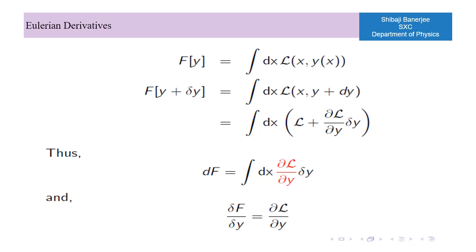When the functional has no dependence on the derivative of the field, the functional derivative is the same as the field derivative of the Lagrangian density.